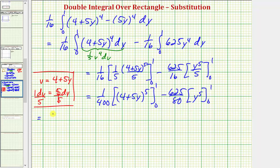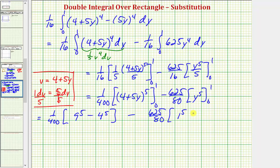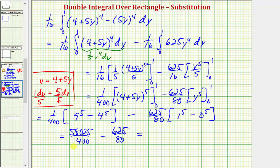Now performing substitution: we have one over 400 times — when y is one, four plus five equals nine to the fifth; minus when y is zero, four to the fifth. Then minus 625 over 80 times — when y is one, one to the fifth; when y is zero, zero to the fifth. Nine to the fifth minus four to the fifth equals 58,025. So we have 58,025 divided by 400, minus 625 over 80, which equals 549 fourths, or 137.25 in decimal form.